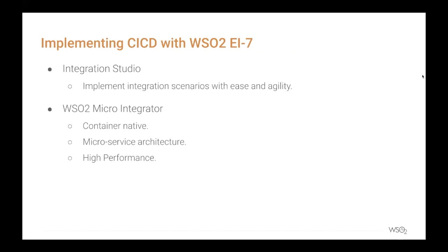Now let's see how WSO2 Enterprise Integrator 7 can be incorporated to create a CI-CD pipeline. WSO2 facilitates CI-CD process implementation with its many products. In the case of Enterprise Integrator, the two main tools involved are Integration Studio and the Micro Integrator. Integration Studio is used to develop integration scenarios easily and intuitively. Micro Integrator is an integration server that helps integrate microservices and cloud-native enterprise architectures using a configuration-driven approach.